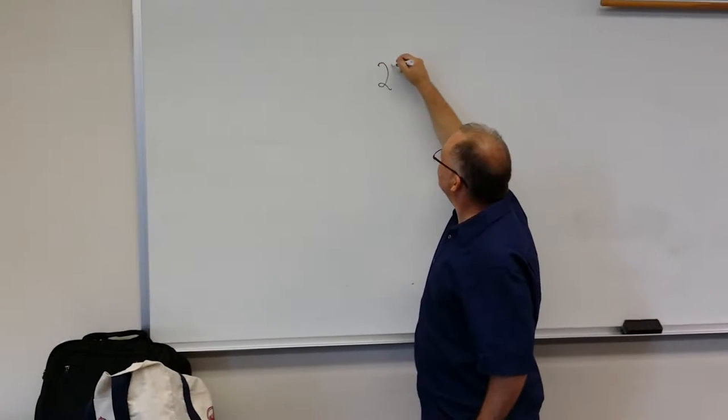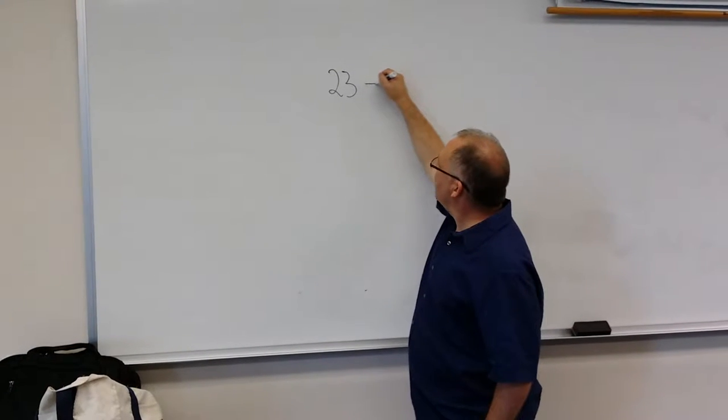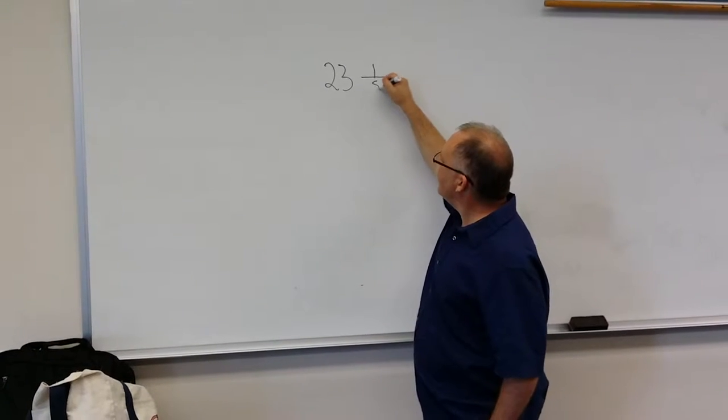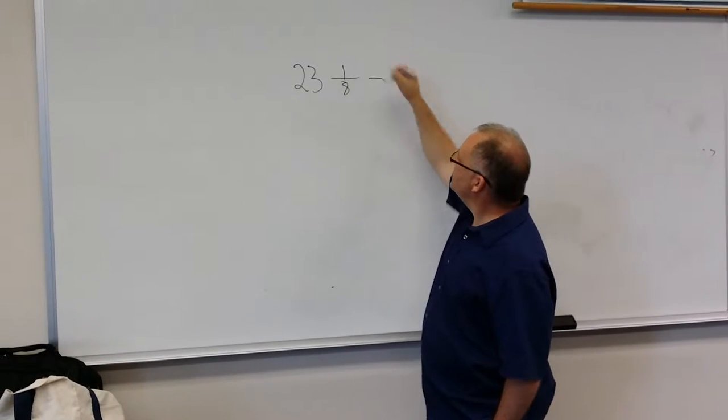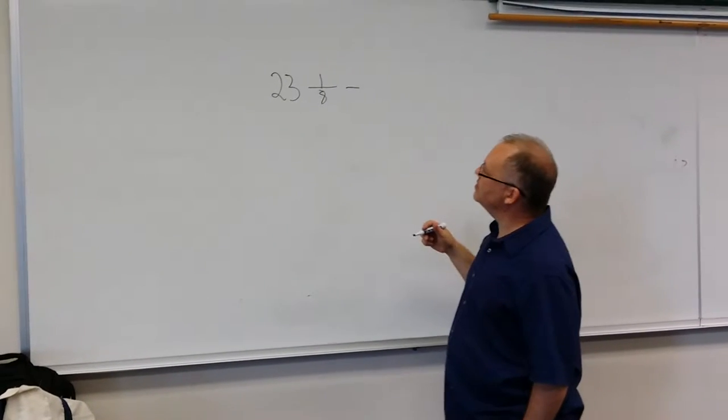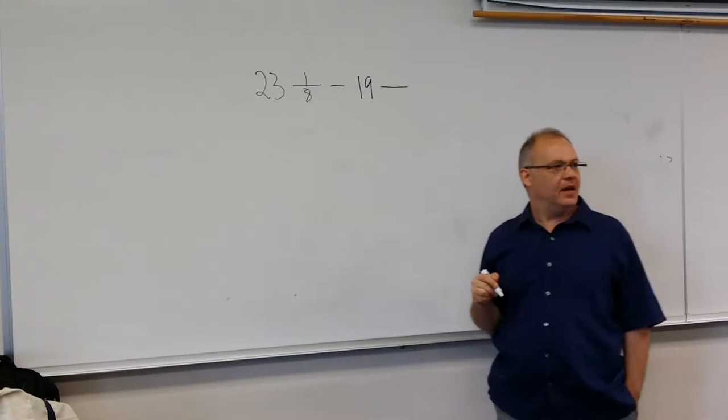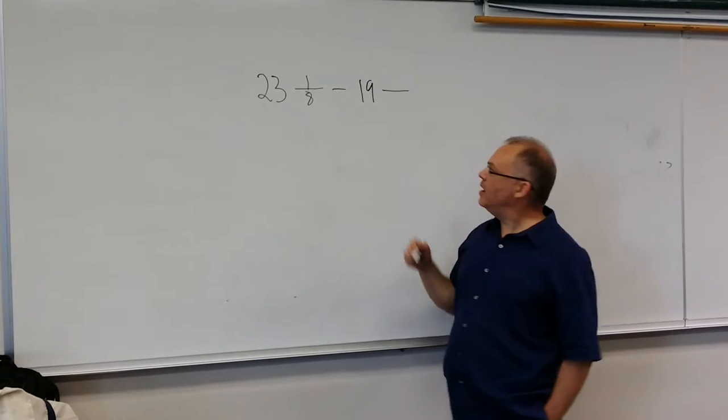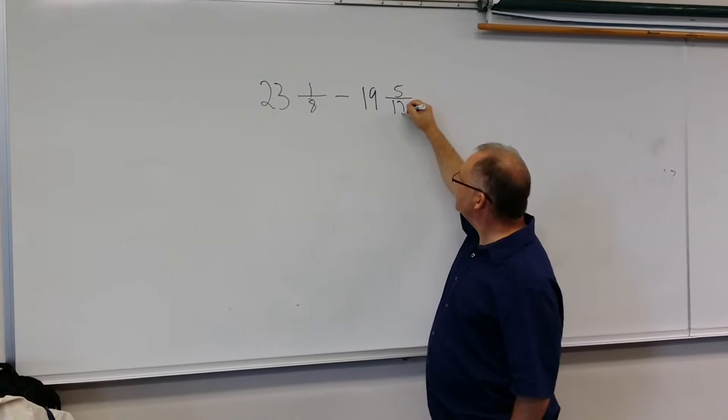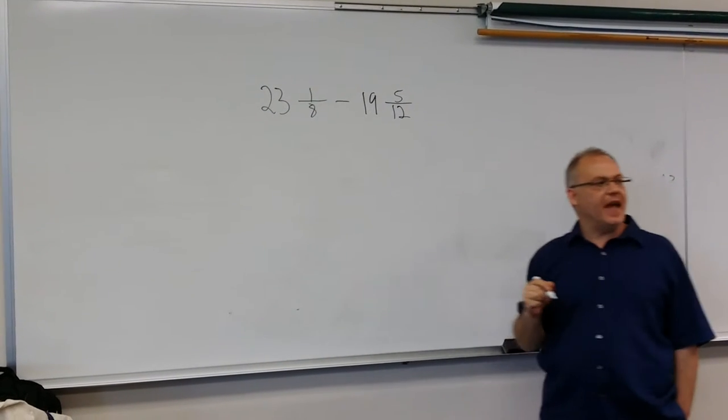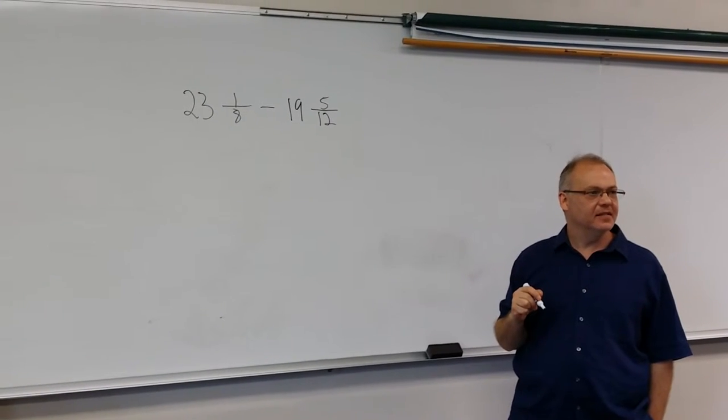Let's take a look. So let's say we have 23 and 1 eighth minus 19 and 5 twelfths. Now whenever we add or subtract fractions, we need to find what class? Common denominators.